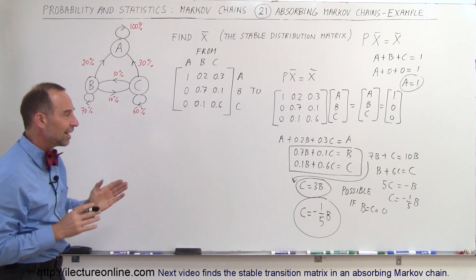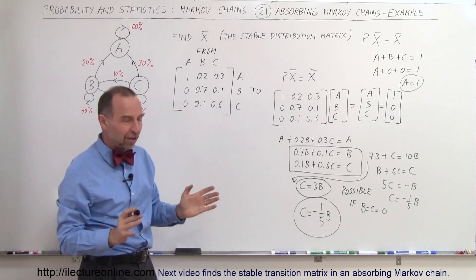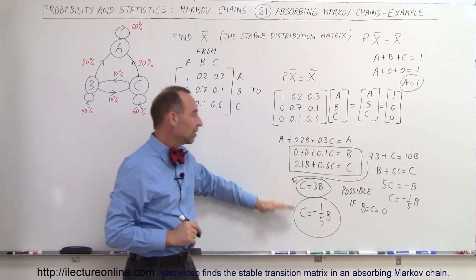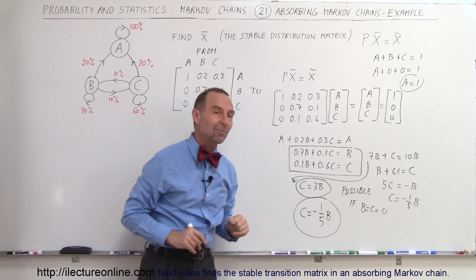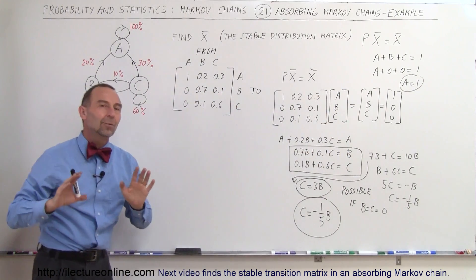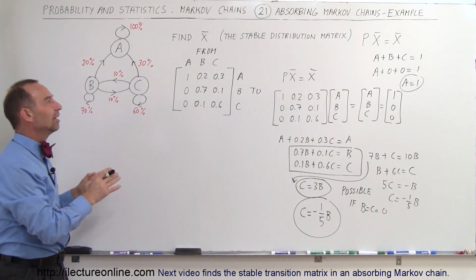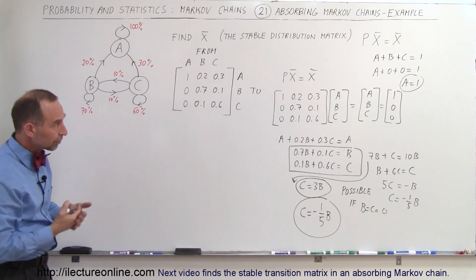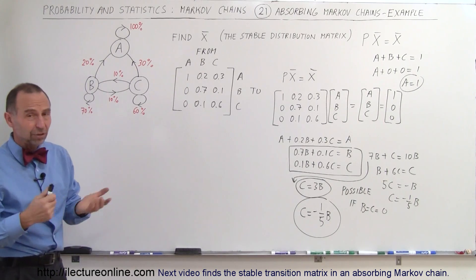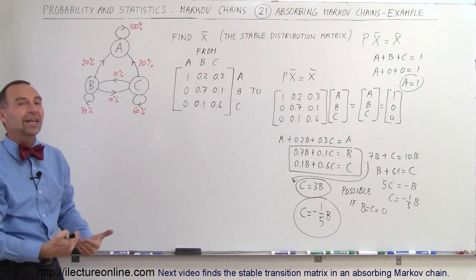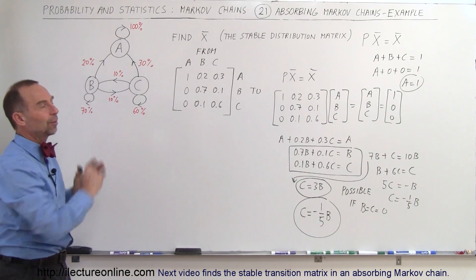So you can see that you get something that looks kind of strange. It's not possible unless you assume that both B and C equal 0, and therefore A must equal 1. Now we have a better technique to find the eventual distribution matrix, the stable distribution matrix, and we'll show you those techniques. Those are specific for absorbing Markov chains.